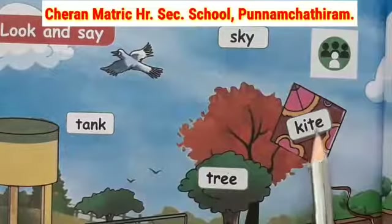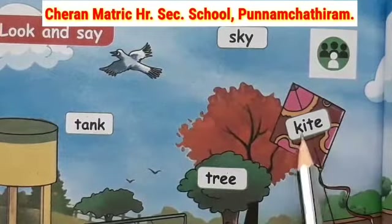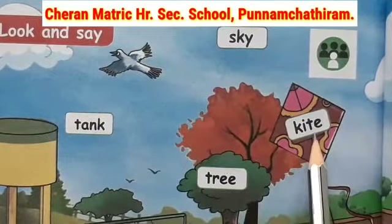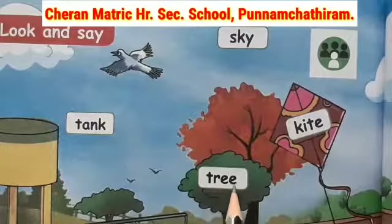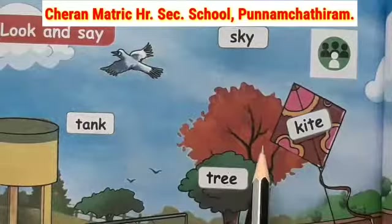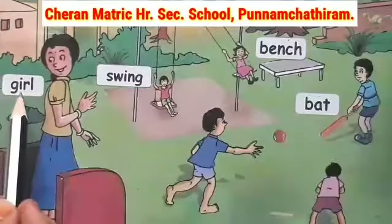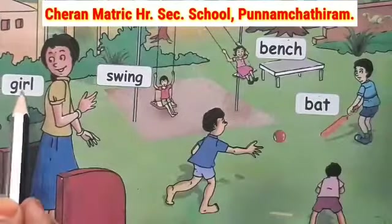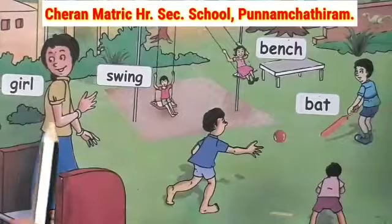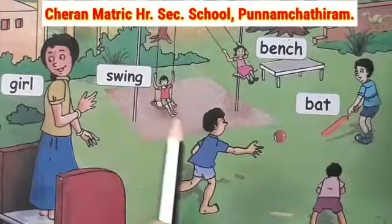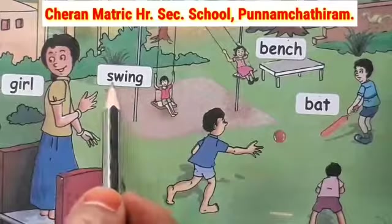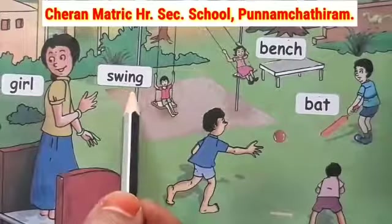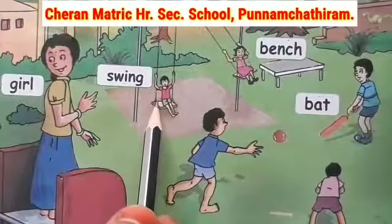K-I-T-E — kite. Kite means patam. T-R-E-E — tree. Tree means maram. G-I-R-L — girl. Girl means pen. S-W-I-N-G — swing. Swing means oonjal.